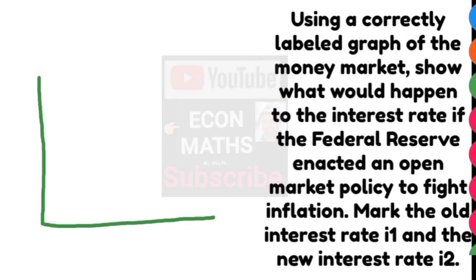In this video we will learn the impact of open market policy to fight inflation on the money market. Using a correctly labeled graph of the money market, show what would happen to the interest rate if the Federal Reserve enacted an open market policy to fight inflation. Mark the old interest rate as i and the new interest rate as i1.